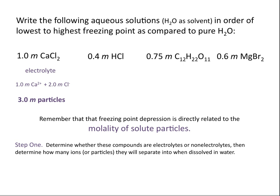HCl is an electrolyte because it's a strong acid. It's not technically an ionic compound, but because it's a strong acid it ionizes completely in solution. For every mole of HCl, you get 1 mole of H⁺ ions and 1 mole of chloride ions. So a 0.4 molal solution of HCl gives 0.4 molal hydrogen ions and 0.4 molal chloride ions — a total concentration of 0.8 molal particles.